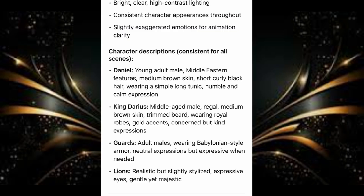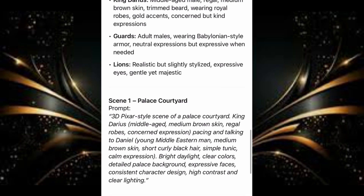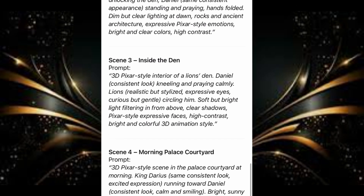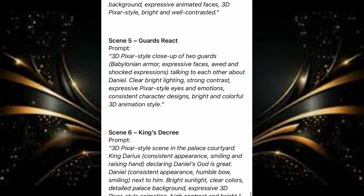We have lions — realistic but slightly stylized, expressive, gentle yet majestic. Now look at scene 1, we have the prompt for scene 1, scene 2, and then we have the prompt for scene 3, 4, 5, and 6. We have 6 scenes for this particular story. So we're going to be generating the images for each scene, and we're going to be using the tool called Google Rix.